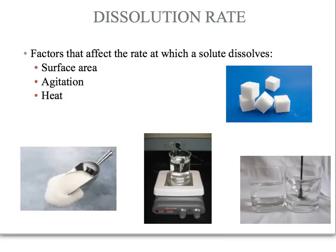Three of these that are very easily manipulated and quite predictable include surface area, agitation, and heat. So if we take a look at surface area,